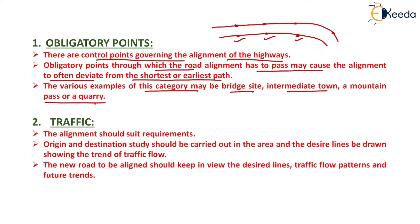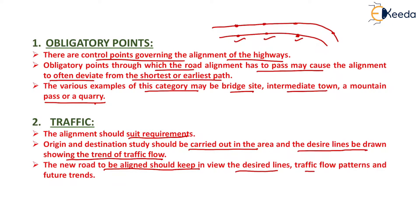The next factor is traffic — the alignment must suit traffic requirements. An origin and destination study should be carried out in the area and the desired lines drawn showing the trend of traffic flow. The new road to be aligned should keep in view the desired lines, the traffic flow patterns, and the future trend.